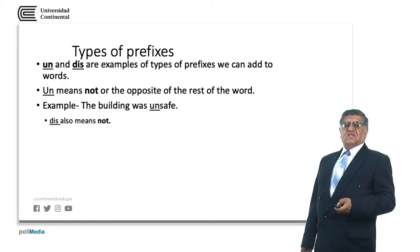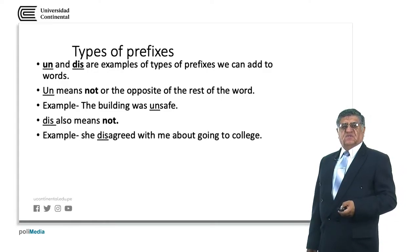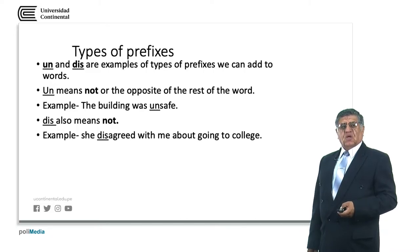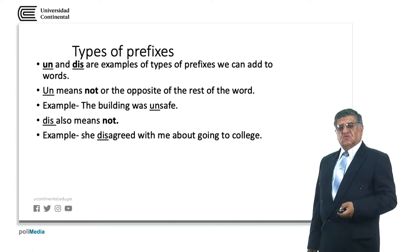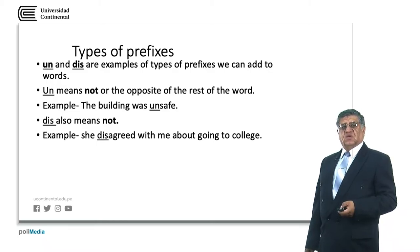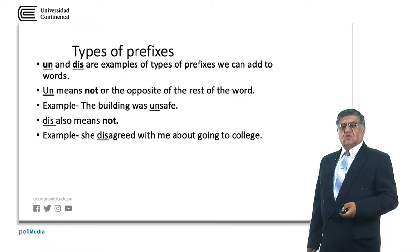We have some negative prefixes. Un- and dis- are prefixes that show the opposite or negative condition. Un- means 'not' and dis- also means 'not.' For example: 'The building was unsafe.' Safe is related to security; unsafe is related to non-security. So 'the building was unsafe' indicates that a condition is not following the rules of safety.